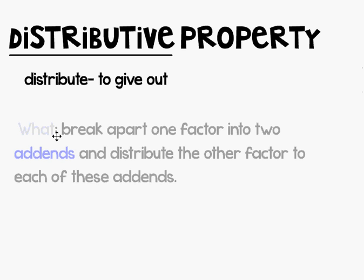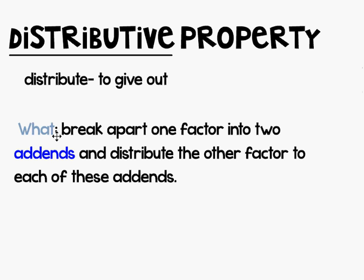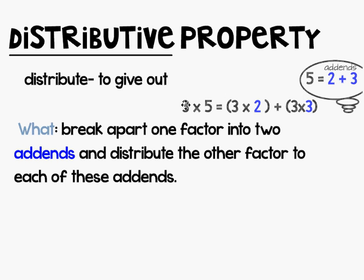In the distributive property of multiplication, we're going to break apart one of the factors — the factor we don't know so well — into two add-ins, and we're going to distribute the other factor to these two add-ins. So if we look at the multiplication statement three times five, we can break apart the five into two plus three. Those are your add-ins. We can then distribute or give out the three to each of these add-ins, so we can do three times two plus three times three. In both cases, our product would be 15.